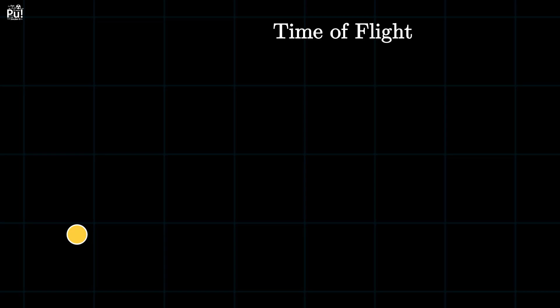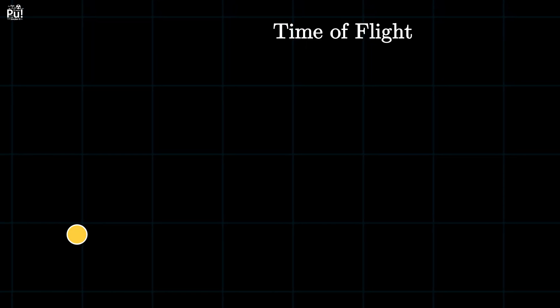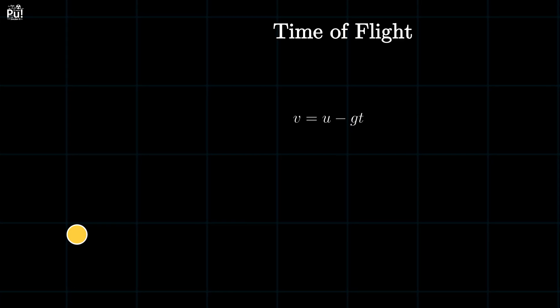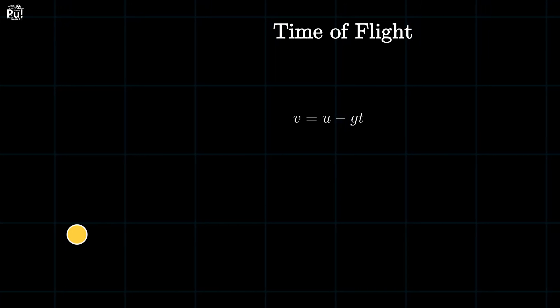This entire up-and-down journey is governed by the same equation from one-dimensional motion. Final speed equals initial speed minus acceleration times time. Let's apply that to the upward motion.